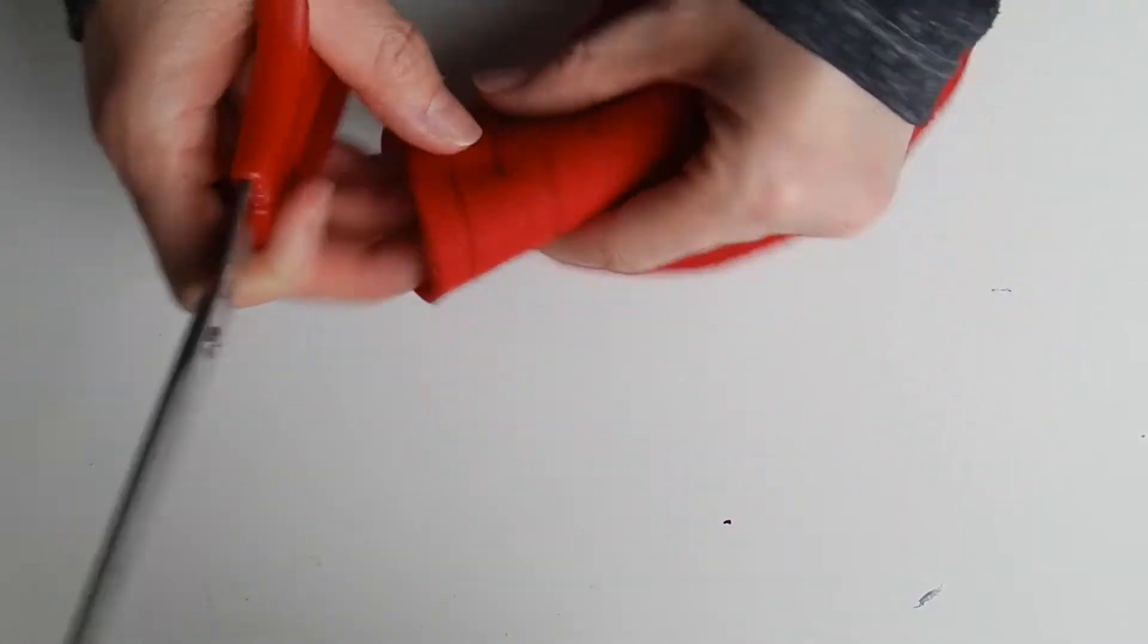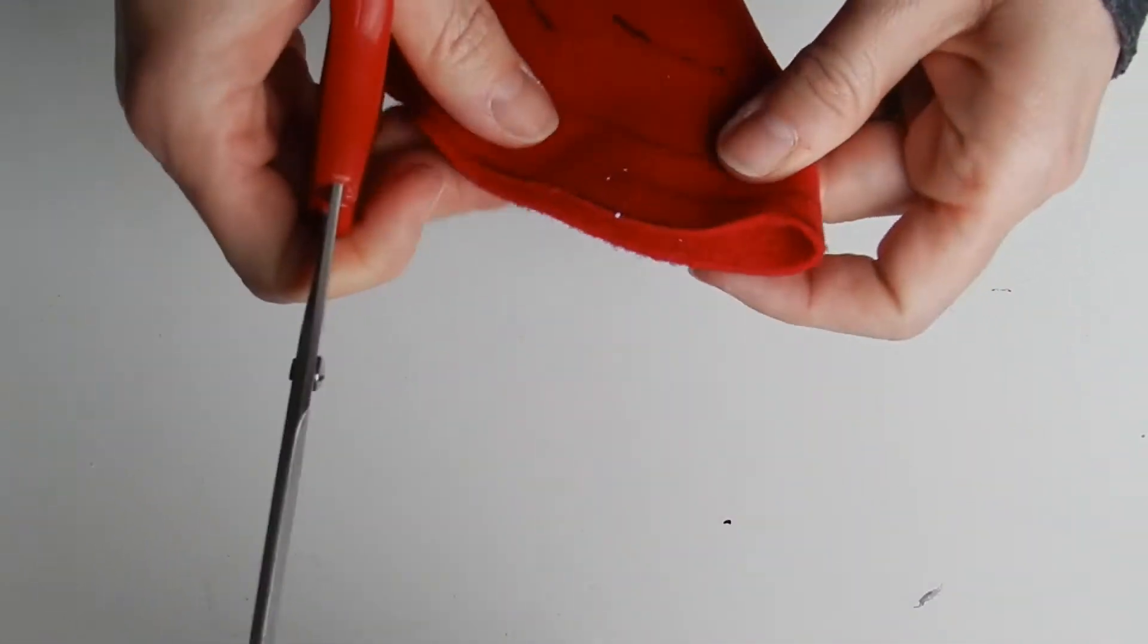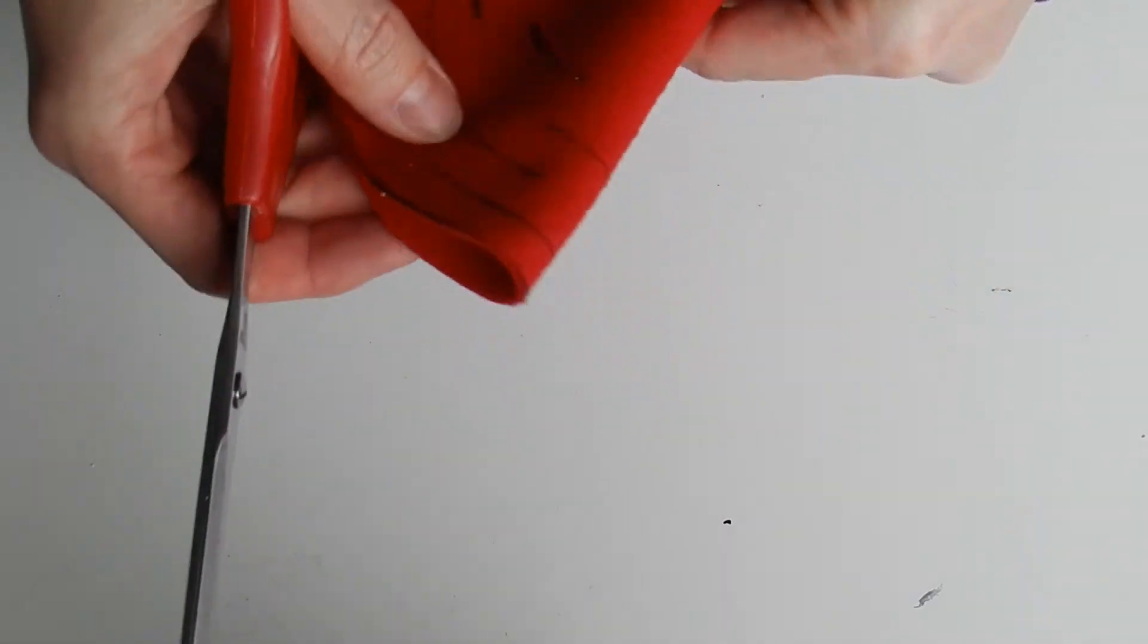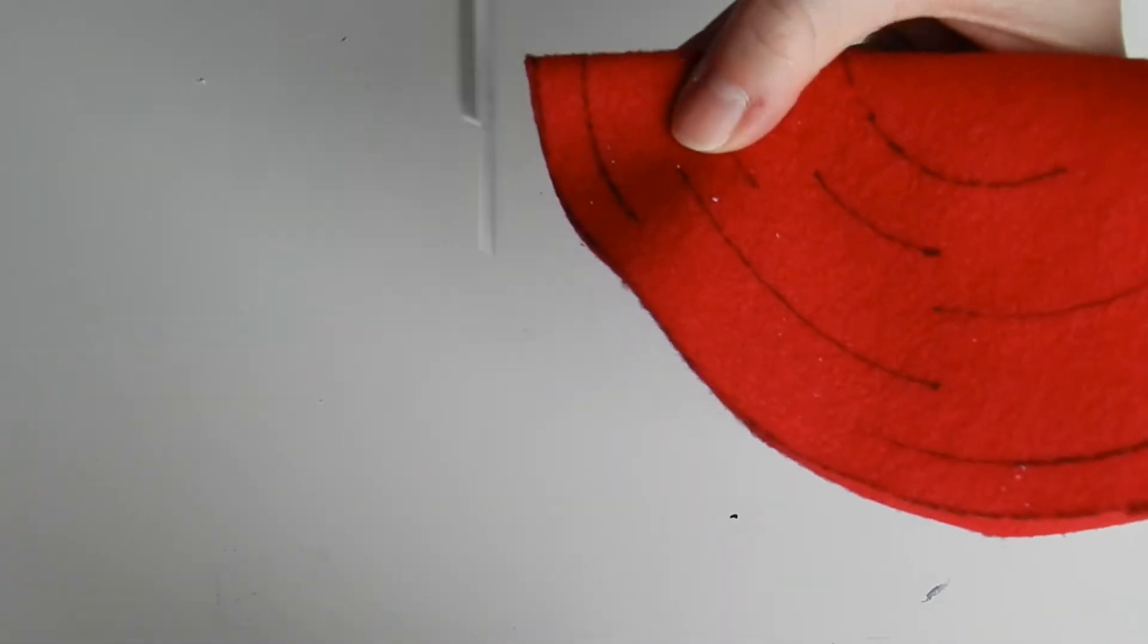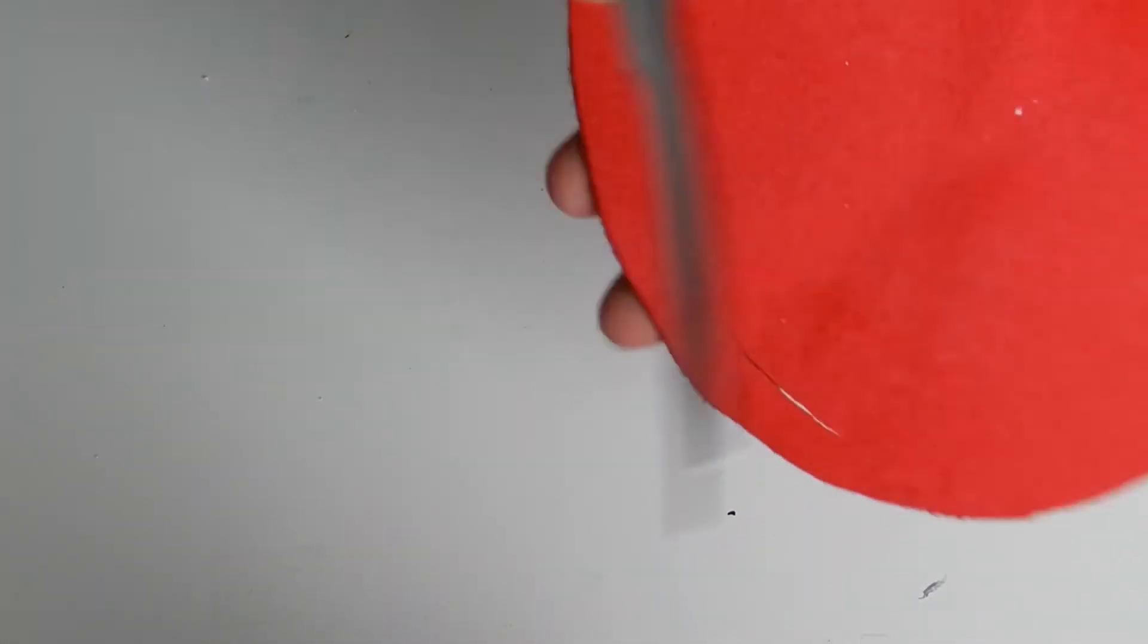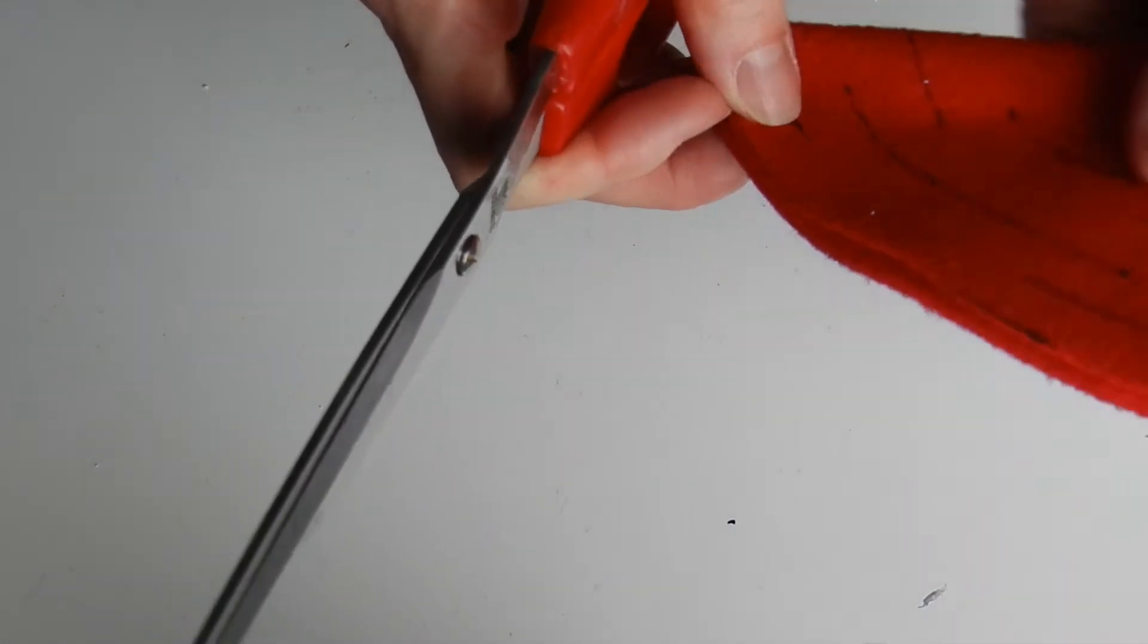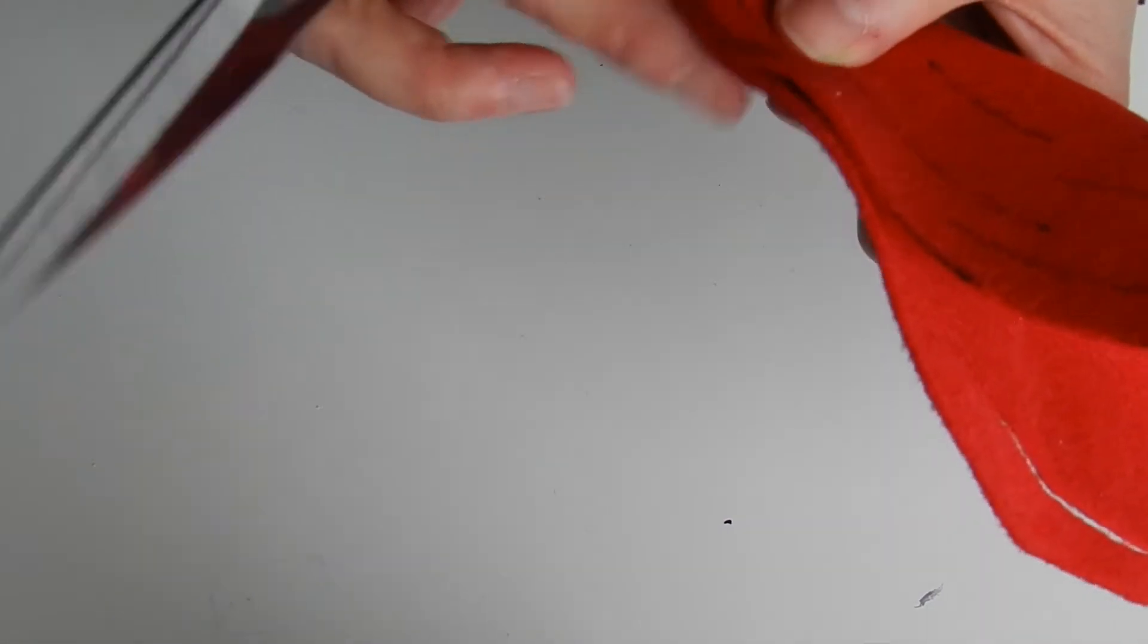Next you're going to cut all of the lines. Now I found the easiest way for me was to line up my circle make sure it was even on both sides of the line and then follow along half of the line and then continue to fold it and cut your lines.